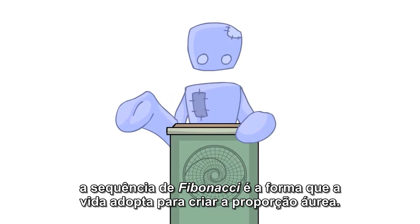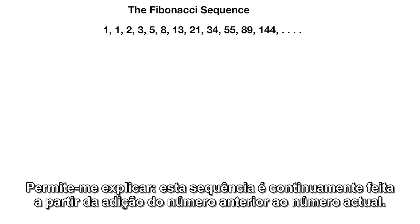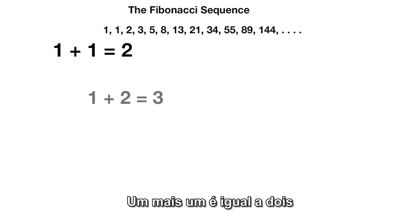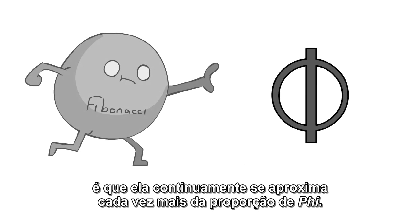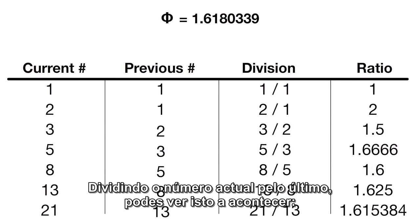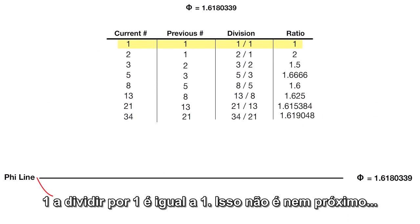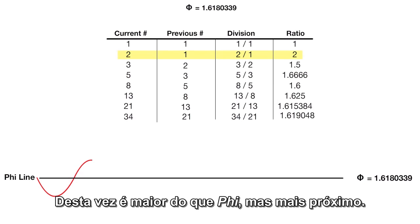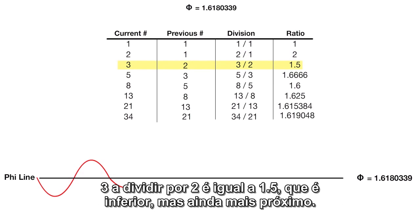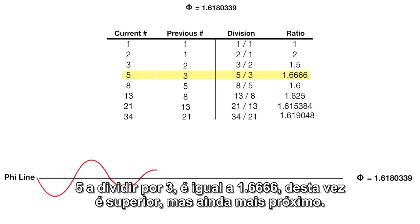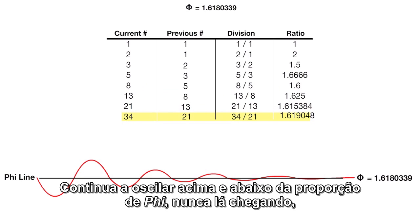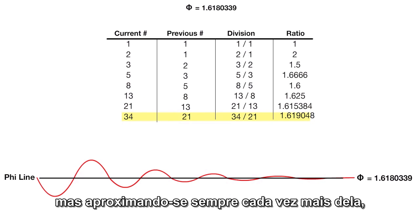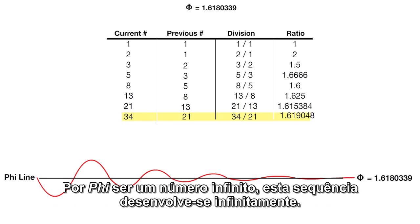Let's move on to Fibonacci. The Fibonacci sequence is life's way of creating the golden mean. This sequence is continually made from adding the previous number to the current: 1 and 1 is 2, 2 and 1 is 3, 3 and 2 is 5, 5 and 3 is 8. What most people don't know about Fibonacci is that it actually continually strives closer and closer to the Phi ratio. By dividing the current number into the last, you can see this happening: 1 into 1 is 1, 2 into 1 is 2, 3 into 2 is 1.5, 5 into 3 is 1.666 — it oscillates over and under Phi, never quite making it, but continuing closer and closer every time. Because Phi is an infinite number, this sequence will go on forever.